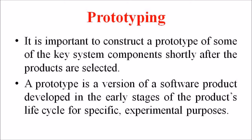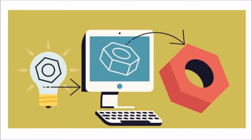Secondly, we are discussing prototyping. It is important to construct a prototype of some of the key system components shortly after the products are selected. A prototype is a version of a software product developed in the early stage of the product's lifecycle for specific experimental purposes. It enables full understanding of how easy or difficult it will be to implement features of the system, and gives users a chance to comment on the usability and usefulness of the system interface design. It can define use cases and makes use case modeling much easier. Prototyping was used as a quick and dirty way to test the design, user interface, and so forth.